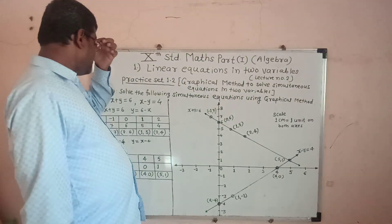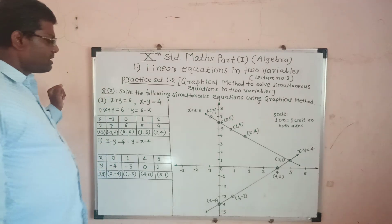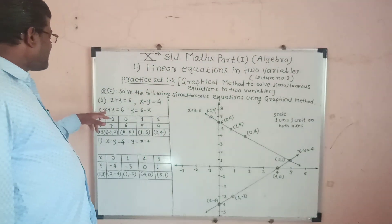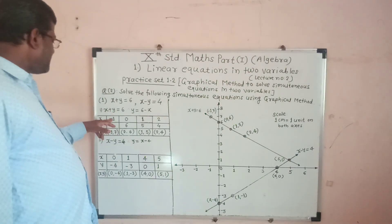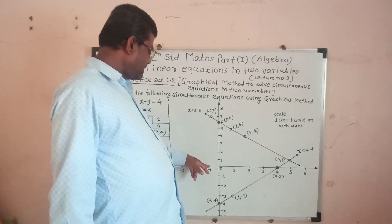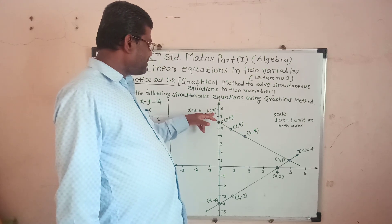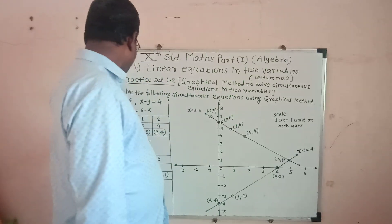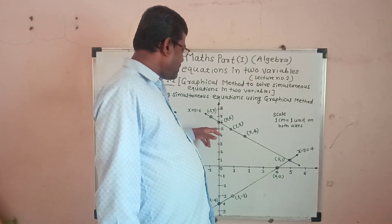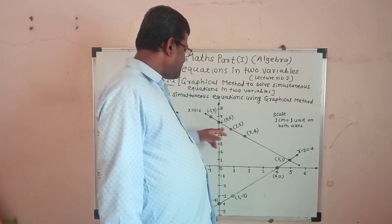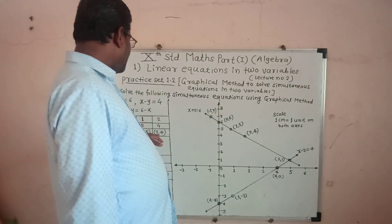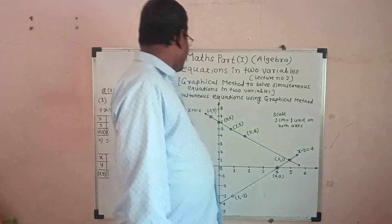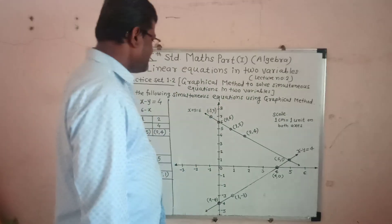Now let us draw the graph of these two linear equations. Draw the x and y axes. For the line x plus y equals 6, plot the points: (−1, 7), (0, 6), (1, 5), and (2, 4). Join all these points and write the name of the equation x plus y equals 6 on the line.